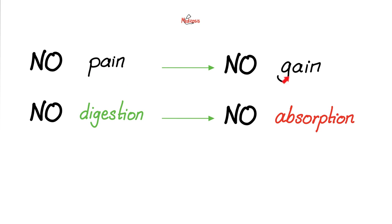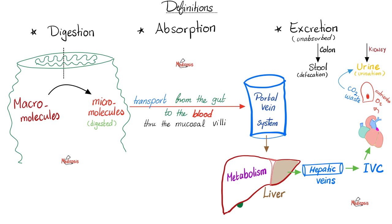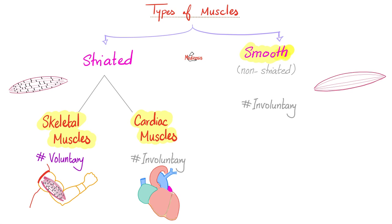Remember: no pain, no gain, no digestion, no absorption. In order for you to absorb nutrients into your blood, first you need to digest them. And you cannot digest them without motility and secretions. We'll talk about motility today. What kind of muscles do we have in the gut? We have smooth muscles.